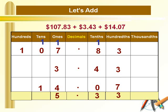Now let's add the digit at the tens place: 1 plus 1 gives us 2. Carry down the digit at the hundreds place as it is. So that gives us the answer as 125.33.